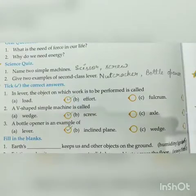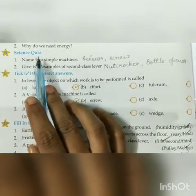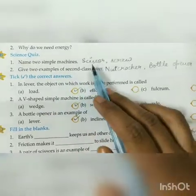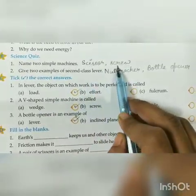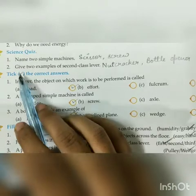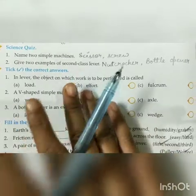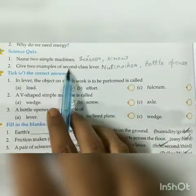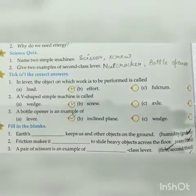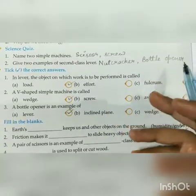Next, page number 90, question number B — science quiz. Name two simple machines: I wrote scissor and screw, but you can write any two simple machines. Question number 2: give two examples of a second class lever. In a second class lever, the load is between the fulcrum and effort. The answer is nutcracker and bottle opener. You can refer to the book to write another answer.